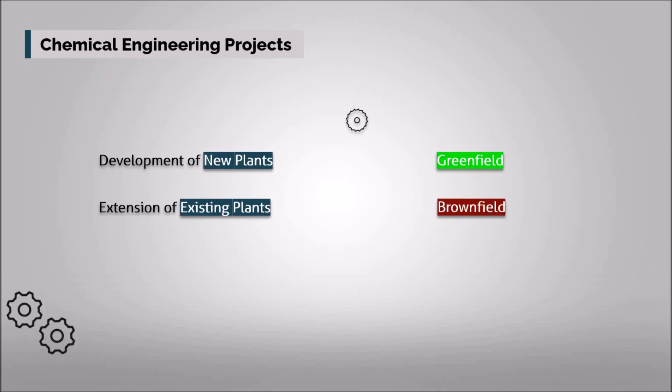The third type of chemical engineering project is production scale-up or debottlenecking, to match the sales demand.